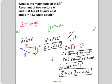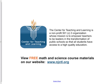So the magnitude of the resultant C shown here in blue is 28.3 units. I'll see you next time.